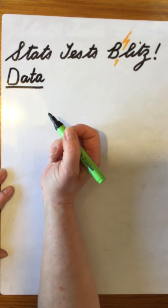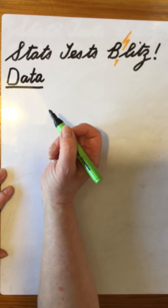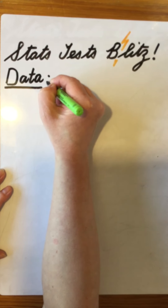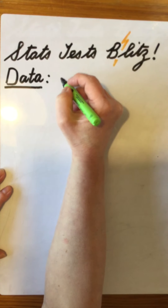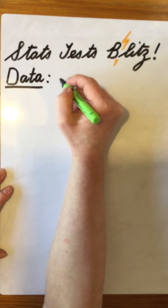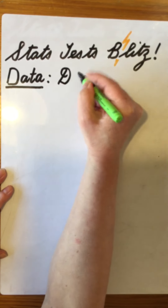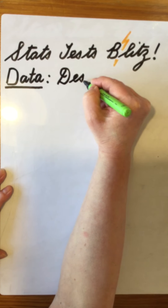And we need to do something with that data. There are two things we can do with it. Firstly, we can describe the data, and to describe it, we use descriptive statistics.